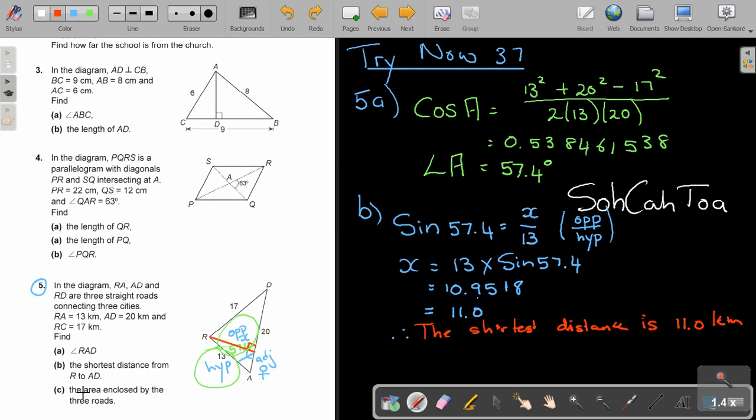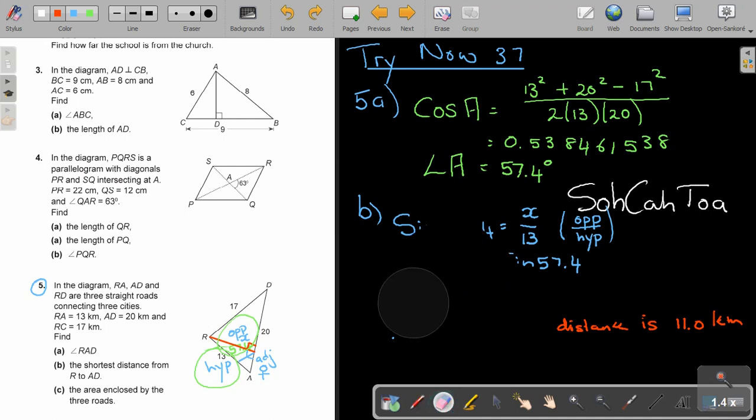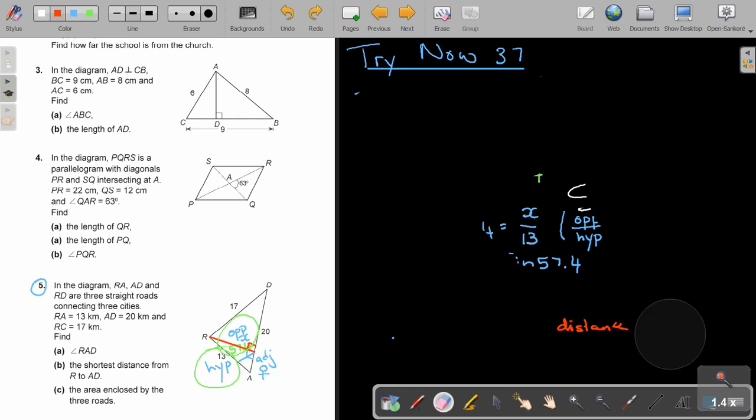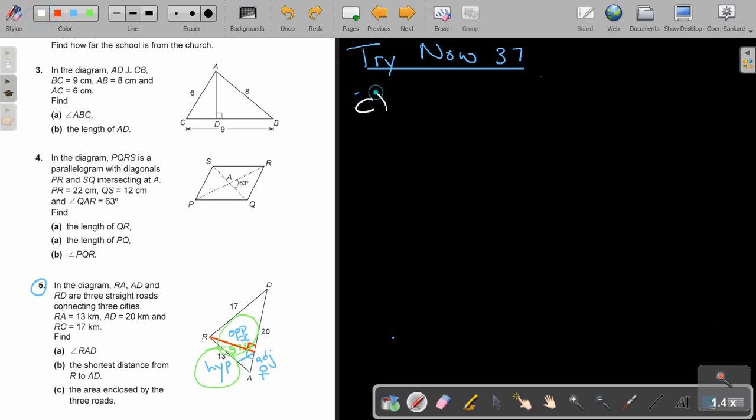So the area enclosed by the free roads. Now, it's just the area. So if I work out, I must have two sides and included angles. So I'm just going to clean here.